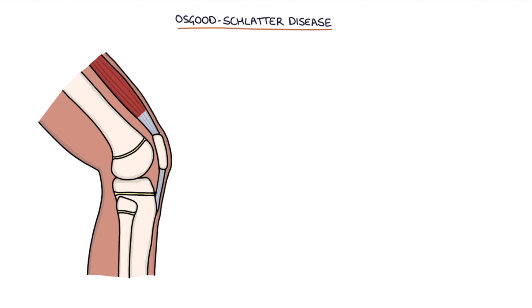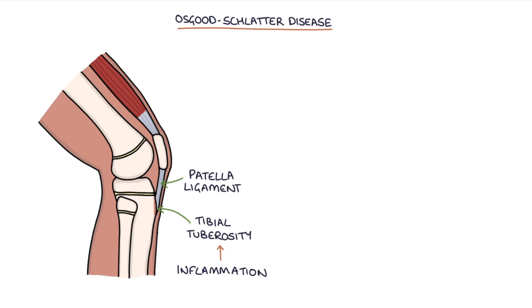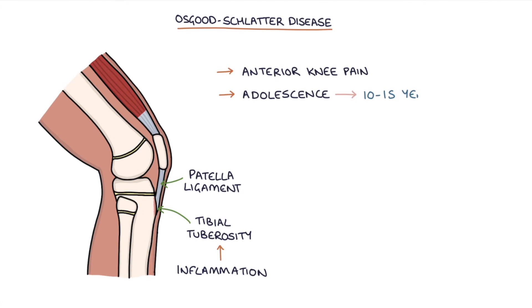Osgood Schlatter disease is caused by inflammation at the tibial tuberosity where the patellar ligament or the patellar tendon inserts. It's a common cause of anterior knee pain in adolescents. It typically occurs in patients aged 10 to 15 years old and is more common in males. It is usually unilateral, affecting only one knee, but it can be bilateral.